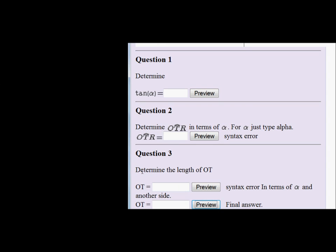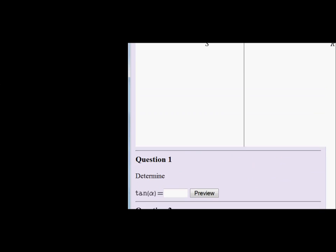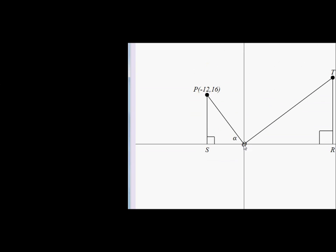Now for the final question: determine the length of OT. If you can see for the first answer box, they say just ignore syntax error for a moment. In terms of alpha and another side. So let's go look where is OT. Here we go, there's OT. And we must write it in terms of alpha and another side.